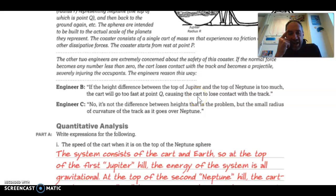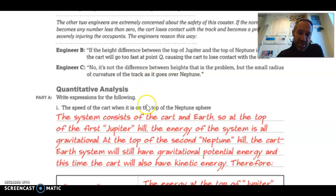Engineer C says no, it's not the difference in the heights that's the problem, but the small radius of curvature of the track as it goes over Neptune. Well, you know, I don't know. I think the difference of the heights is an issue because it's the difference in the heights that really determines how fast you're going to go. That radius is important too, and that radius is important to circular motion, of course, but I think I like what Engineer B said a lot.